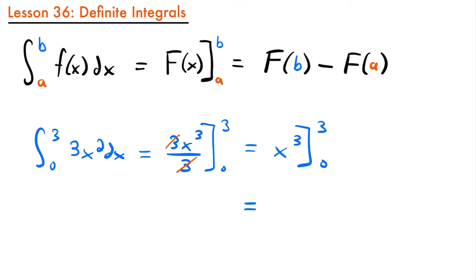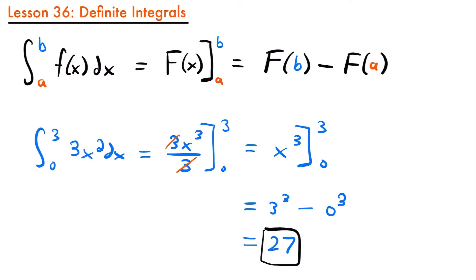This will be equal to plugging 3 into x cubed, so we'll have 3 cubed minus 0 cubed. That's going to be equal to 27 minus 0, so we just have 27 — the answer to that definite integral. We can use this process thanks to the fundamental theorem of calculus to evaluate definite integrals.